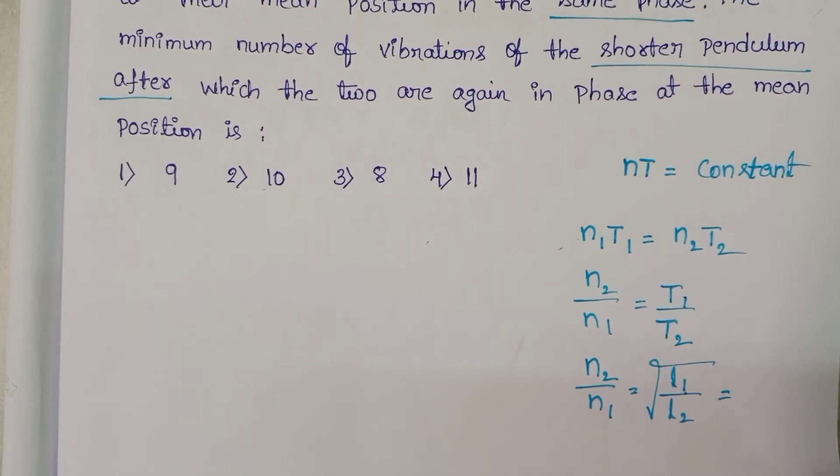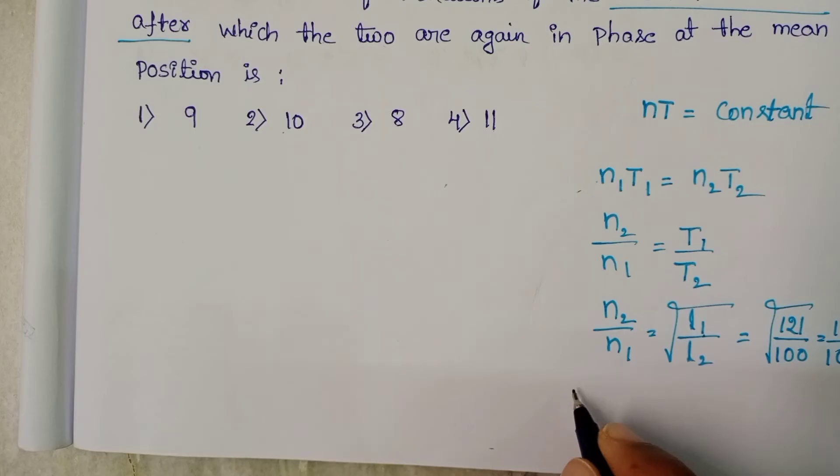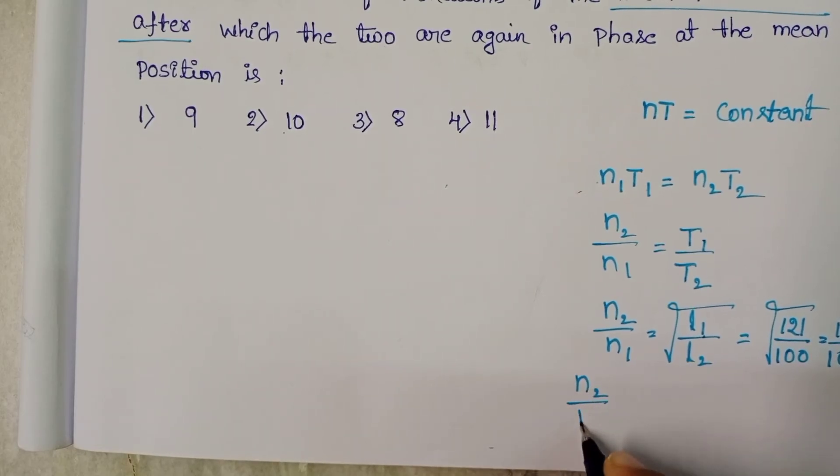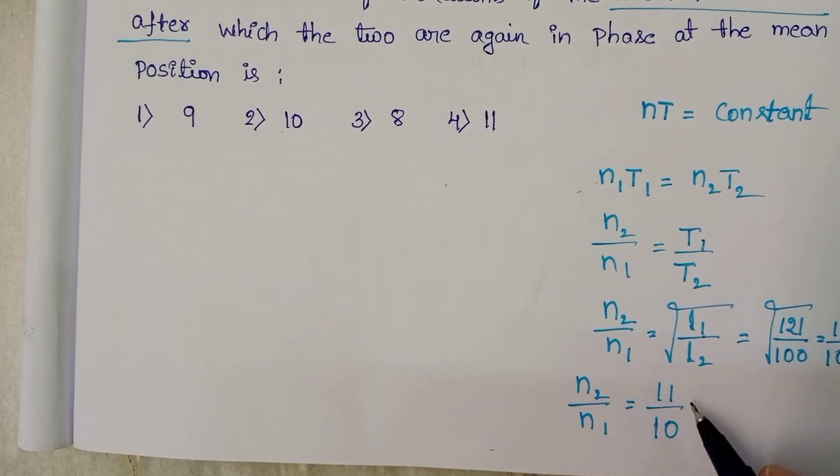Length of the first pendulum is 121 cm, and the second pendulum is 100 cm. Then it becomes 11 by 10. N2 by N1 equals 11 by 10. Here N2 value is 11 and N1 value is 10.